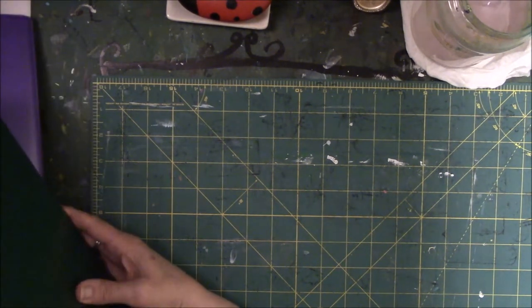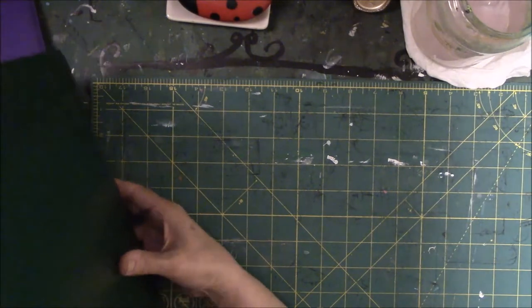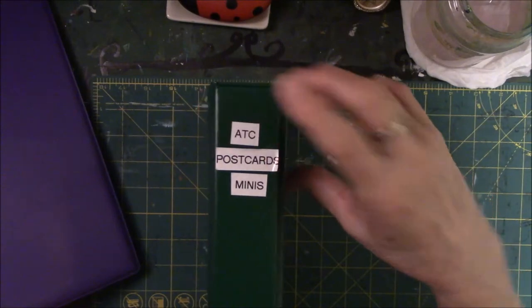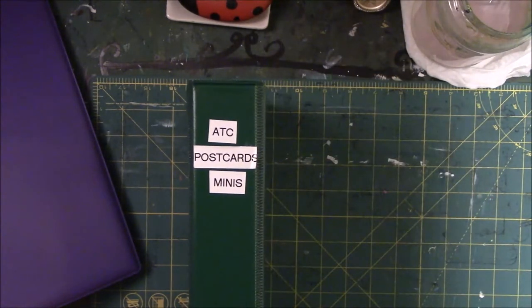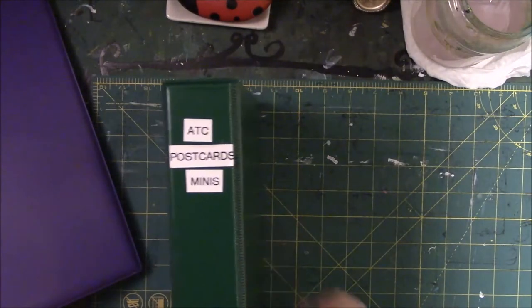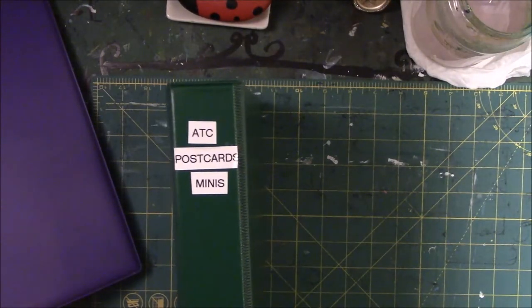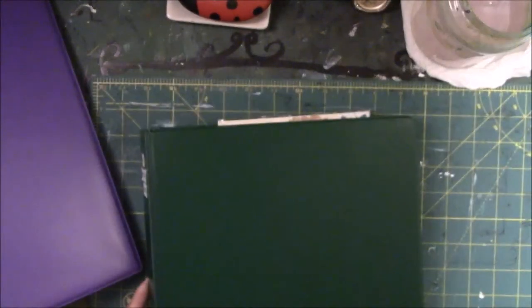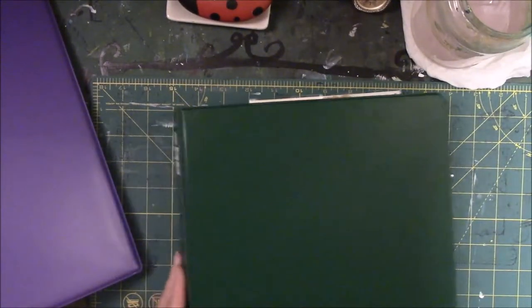So the first one is a skinny one. This one is labeled ATC postcards and minis. I think this is an inch or inch and a half width notebook.